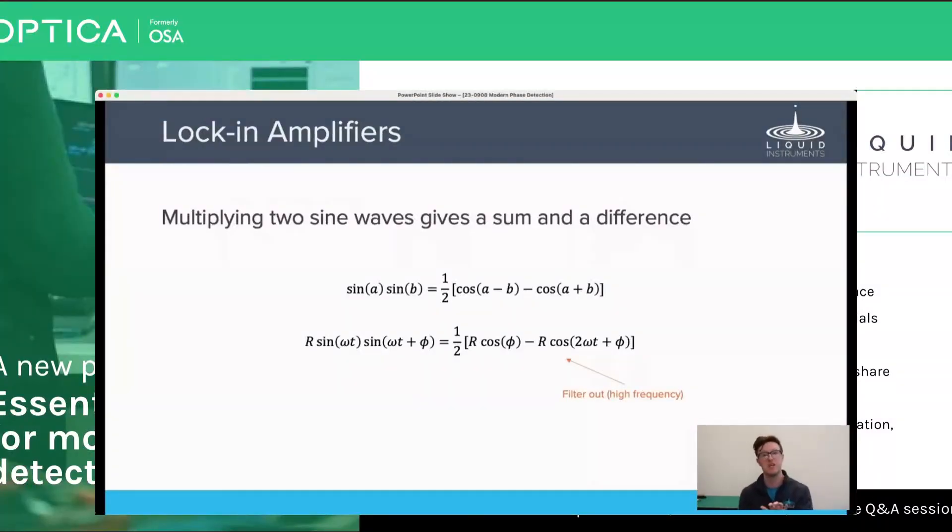So a lock-in amplifier is designed to filter out this harmonic, the second harmonic. And then all you're left with is your measurement, your frequency of interest shifted down to DC.